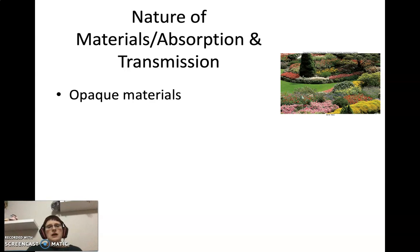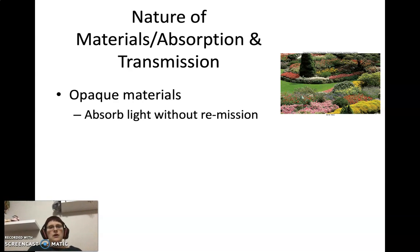We can classify materials as either opaque or transparent, and this affects their ability to either absorb or transmit light. So opaque materials, these are materials that can absorb light without re-emitting it. If you think about examples of materials that don't allow light basically to pass through them, that's what we're talking about as far as opaque materials. You yourself are an exact example of an opaque material because you can't see through you. That means that light isn't passing through you. You're absorbing that light.